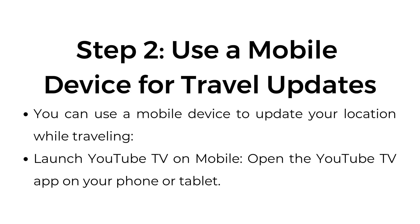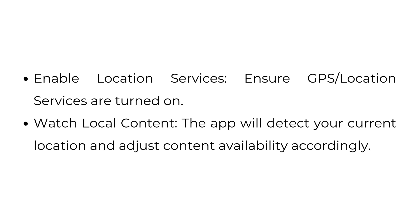Step number two: use a mobile device for travel updates. You can use a mobile device to update your location while traveling. Launch the YouTube TV app on your phone or tablet, and ensure GPS and location services are turned on. The app will detect your current location and adjust content availability accordingly.